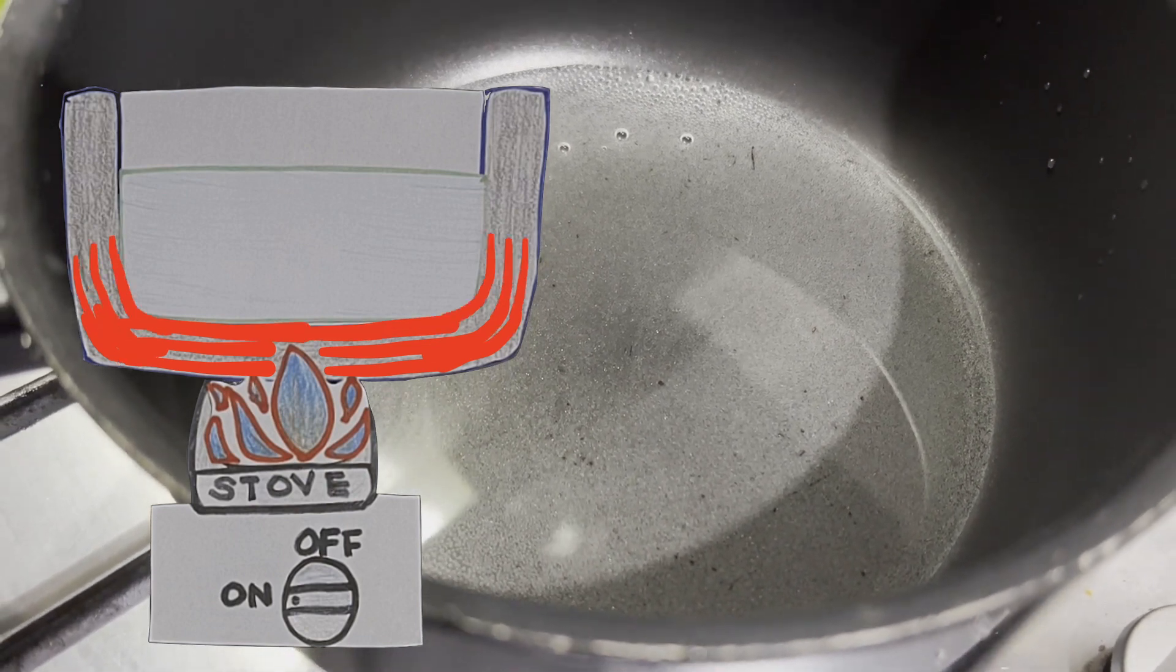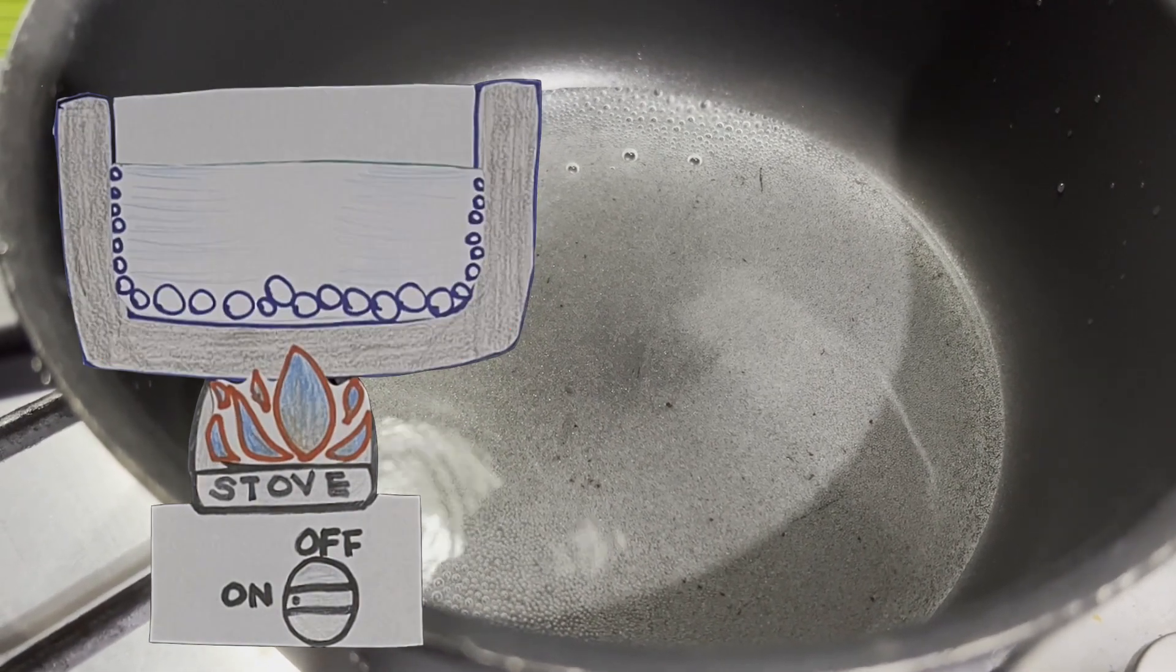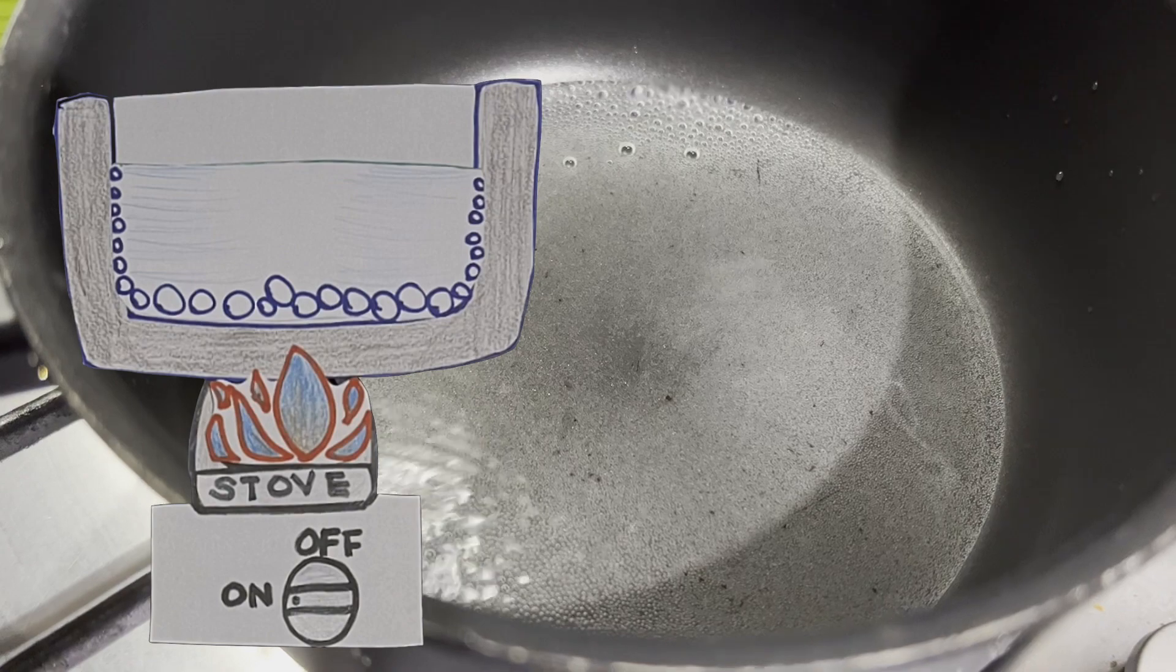The water touching the inner side of the pot then gains heat from the pot. This is why bubbles start to form in the water, touching the inner sides of the pot.